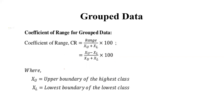Now the next point: we need to understand the coefficient of range for grouped data. In grouped data, we calculate the same range in the numerator and denominator. Here, Xu means the upper boundary of the highest class and Xl means the lower boundary of the lowest class. In notational format, we can write it down the same way to get the coefficient of range.